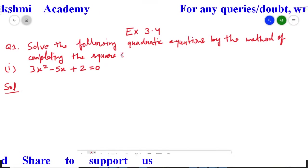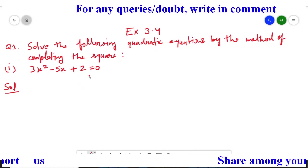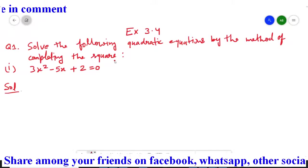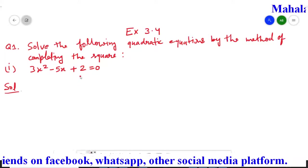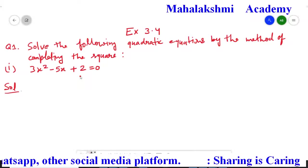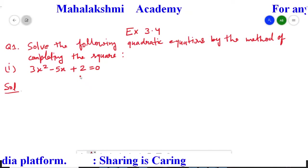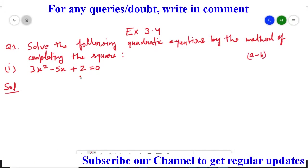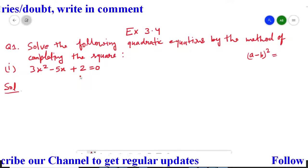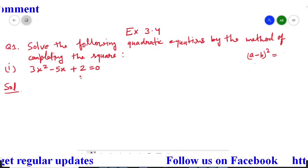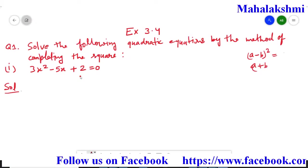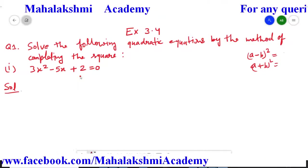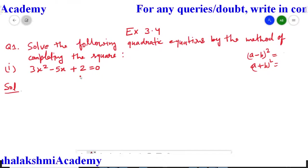In this question, we have to solve the given quadratic equation by the method of completing the square. Completing the square method means we have to convert the given equation into the form of (a+b)² or (a-b)². The left hand side should be in the form of (a-b)² or (a+b)².